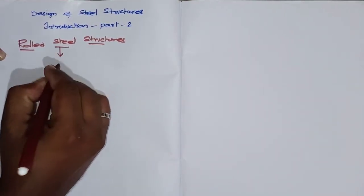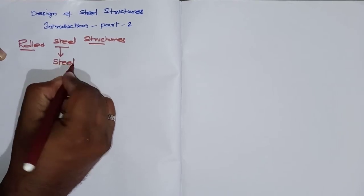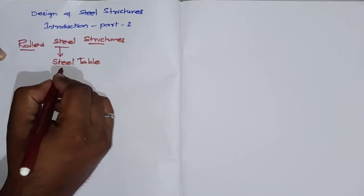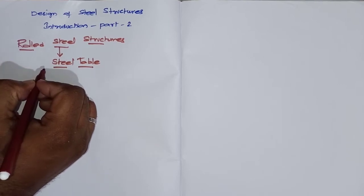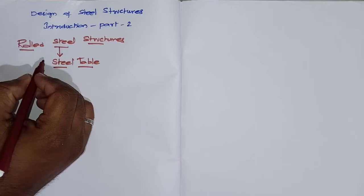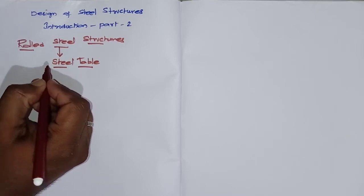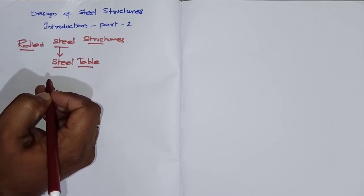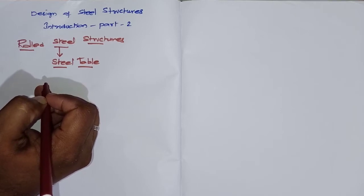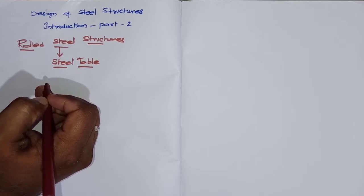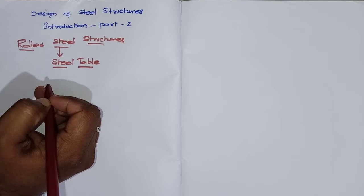The details of rolled steel sections are found in your steel table book — note that the steel code is different from the steel table. In the steel table, details of geometrical properties such as weight, cross-sectional area, width, and thickness are available. Before buying, during design we choose the section from the steel table, and if we get a safe value, we then go to buy it from the market.